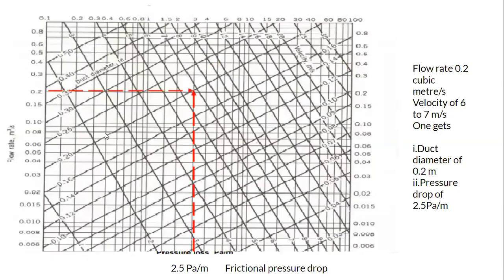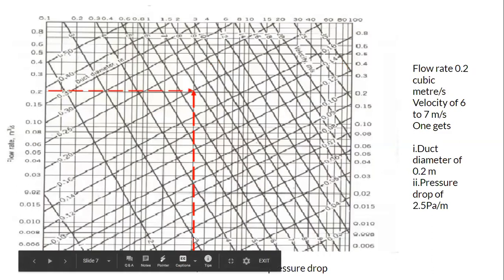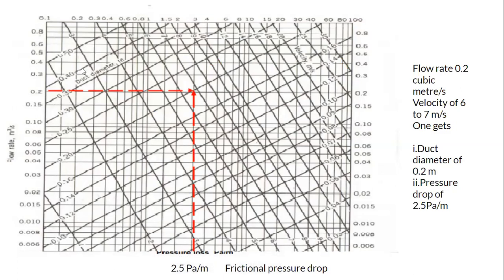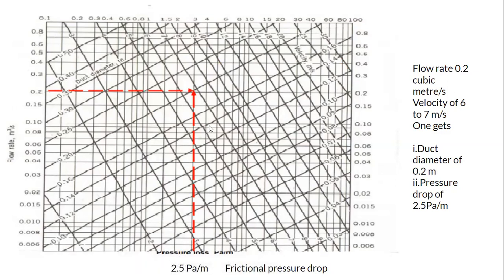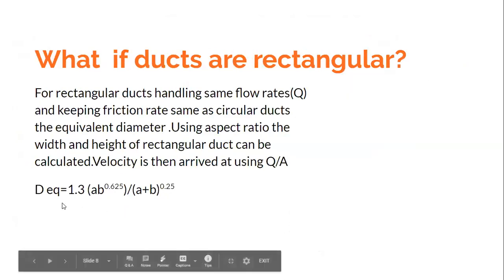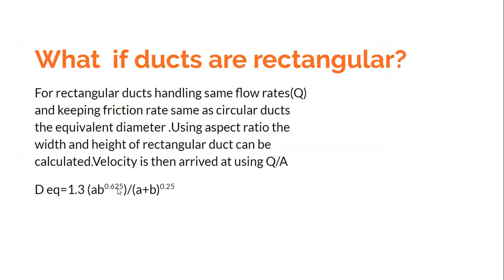For example, suppose I want to design a duct with a friction drop of 2.5 Pascals per meter and a flow rate of 0.2 cubic meters per second, and I am supposed to use a rectangular duct. From the circular duct chart, I get an equivalent diameter of 0.2 meters. I am not going to choose a rectangular duct with both width and height of 0.2 meters. Instead, I use the empirical relation for equivalent diameter.